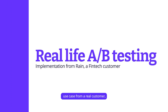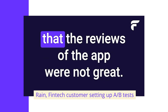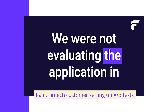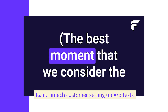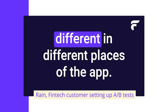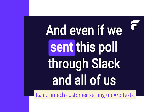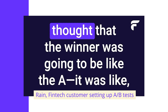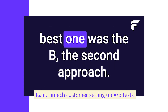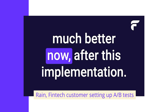Now let's take a look at a use case from a real customer — a fintech company running A/B tests with feature flags to test how different versions of a pop-up perform in their app. The app reviews were not great because they weren't prompting users for feedback at the optimal moment. They created two different pop-ups in different places in the app and evaluated user feedback depending on the pop-up position. They also sent a poll through Slack. All of them thought the winner would be option A — it seemed intuitive — but when they ran the test they found that option B, the second approach, was actually the winner. The reviews improved significantly after this implementation.